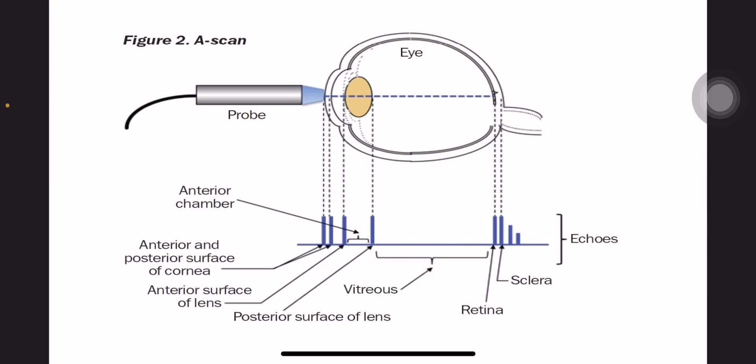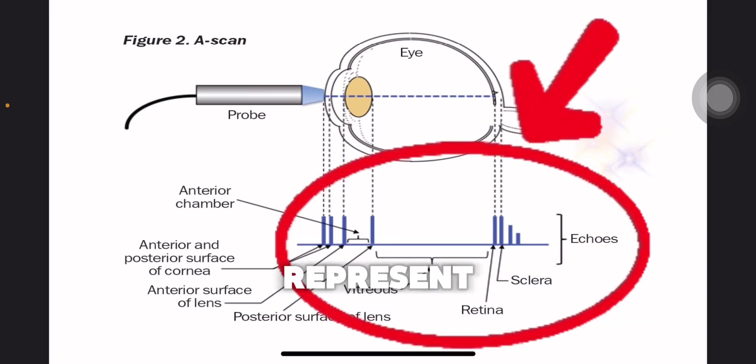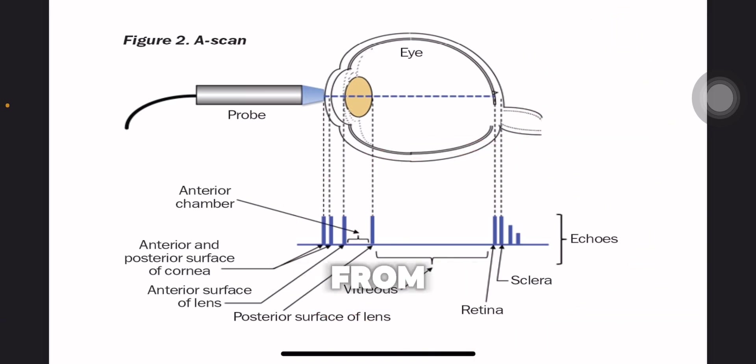These vertical bars labeled as echoes represent the returning echoes from the different interfaces within the eye where there's a change in tissue density. Notice how each echo corresponds to a specific interface within the eye.